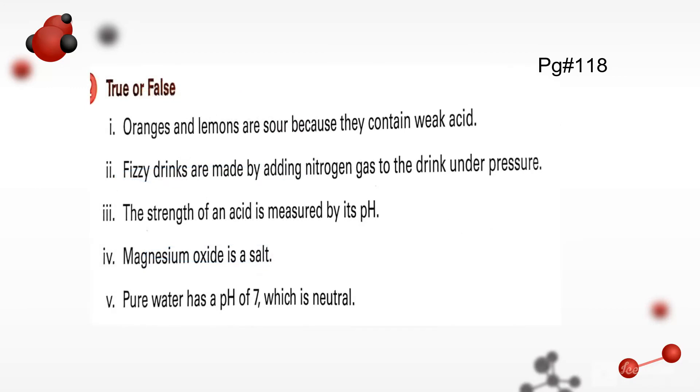Now come towards the true and false questions. Oranges and lemons are sourish because they contain weak acid - it's a true statement. Fizzy drinks are made by adding nitrogen gas to drink under pressure - it's a false statement because carbon dioxide gas is added to fizzy drinks. The strength of an acid is measured by its pH - it's a true statement.